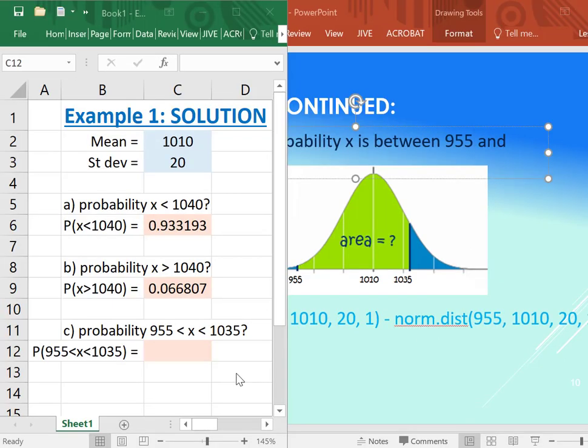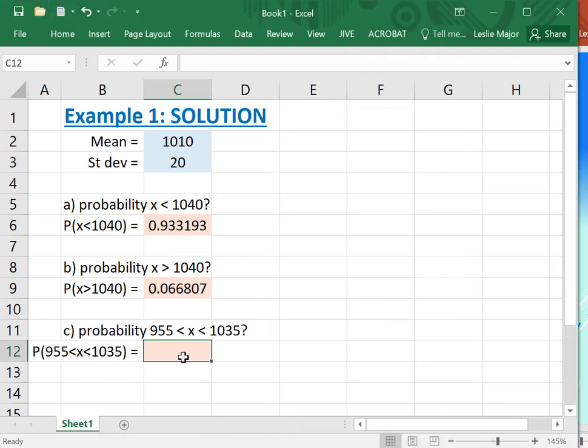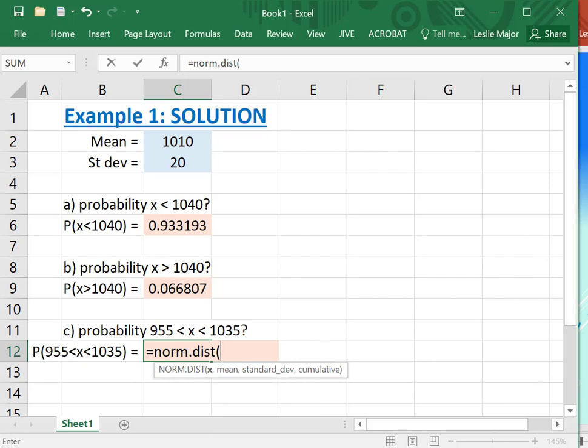Okay, so here we are. So we want to be between 955 and 1035, and to do this in Excel, again we just subtract the two norm.dists. You could actually even just grab the text off of the PowerPoint here and just paste that straight in here if you wanted.